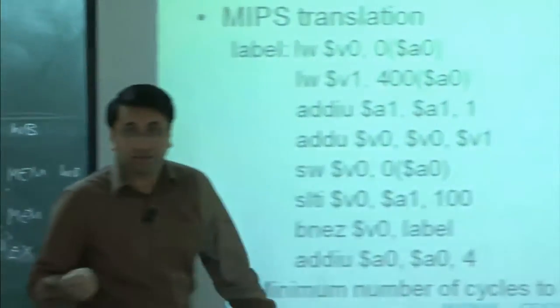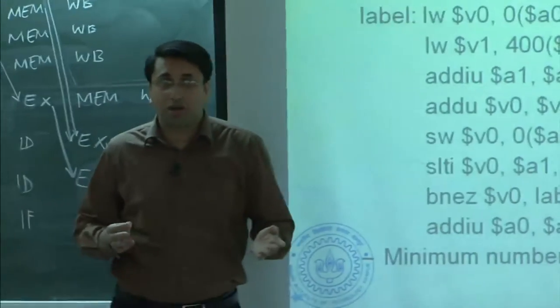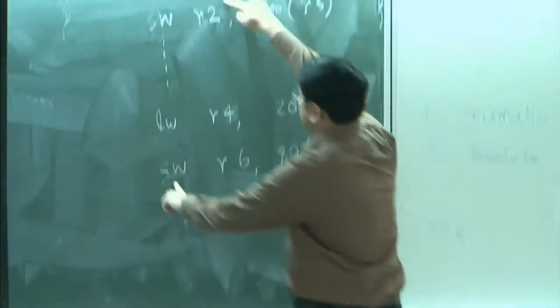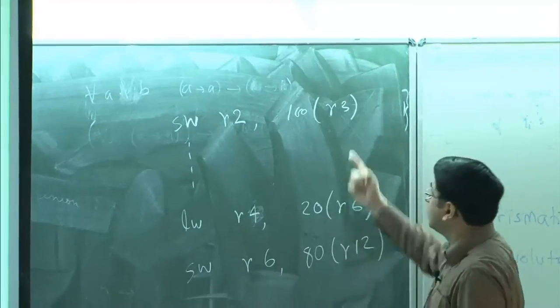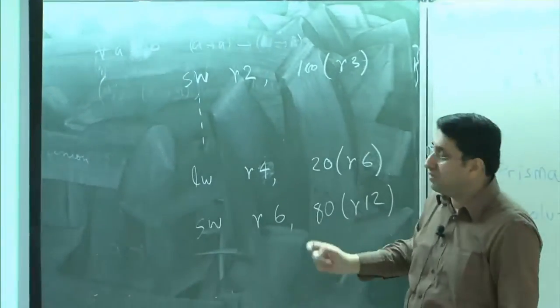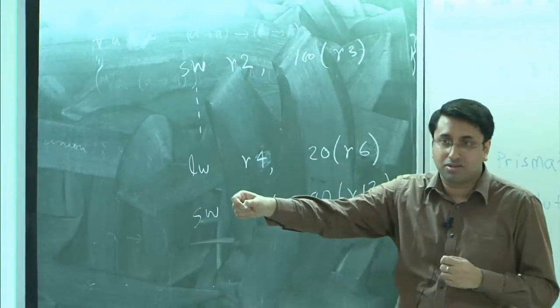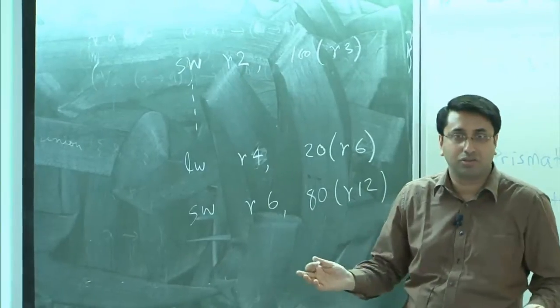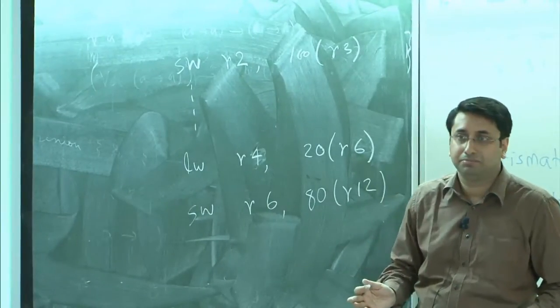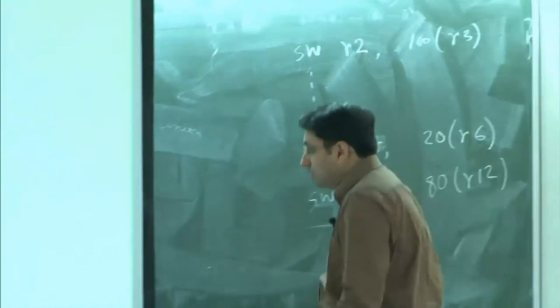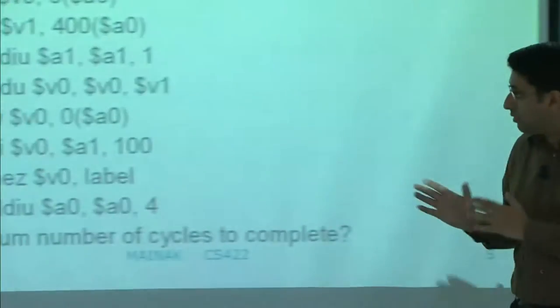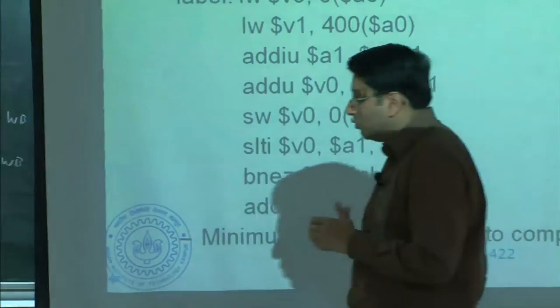This will also resolve memory dependence the same way, because two memory operations get two different issue slots. Even if they have different addresses it does not matter — finally they will write to memory in order, but they can execute out of order without any problem. We will continue from here next time and try to concretize this model more.